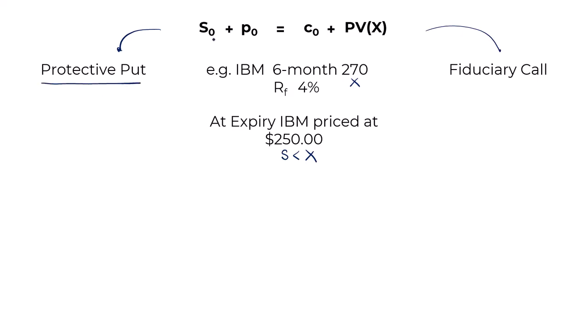What do we get out of our protective put, S and P? Well, the underlying at expiry is worth the underlying. We're just told there it's worth $250. What about the payoff on the put? Well, the underlying is worth less than X. The put is the right to sell. The right to sell has an intrinsic value at expiry when the underlying is worth less than the strike. You can sell it for 270 when it's only worth 250. Your payoff will be 20. The protective put is paying off 270.